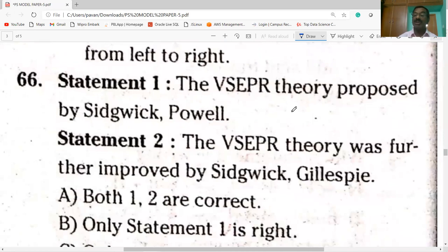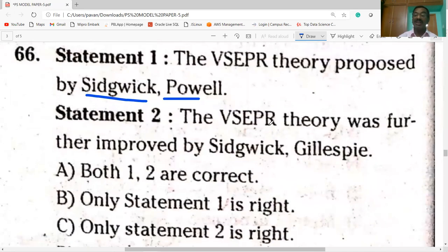Next question. The VSEPR theory was proposed by Sidgwick and Pauling. Valence shell electron pair repulsion theory. Valence electron pair repulsion theory was further improved by Sidgwick and Gillespie, not Sidgwick. So option A is correct, statement 1 is correct, statement 2 is wrong. Here only statement 1 is correct.